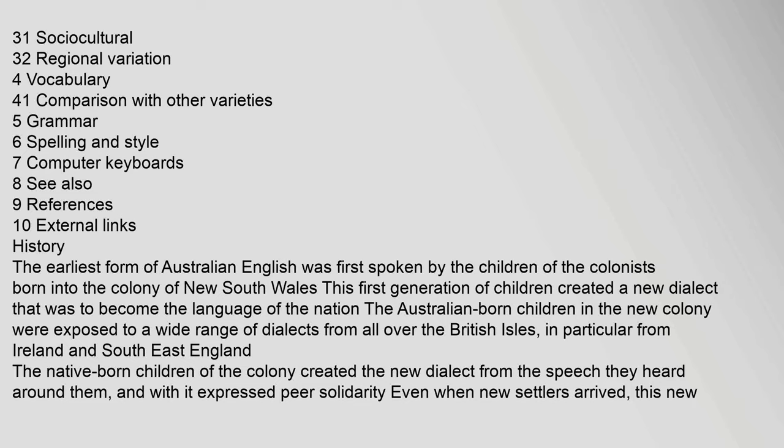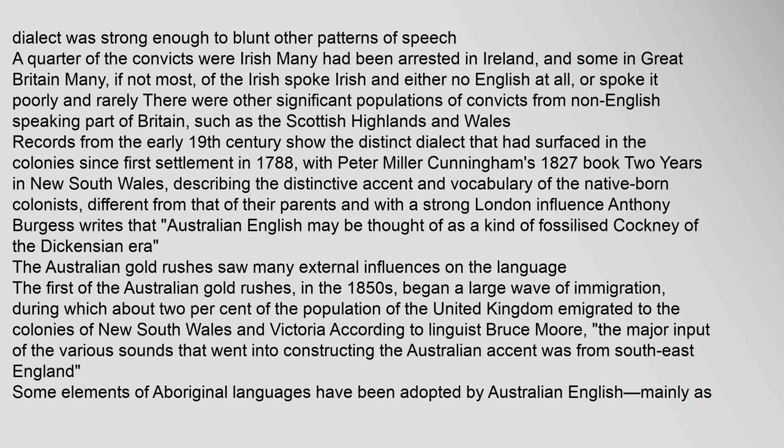The earliest form of Australian English was first spoken by the children of the colonists born into the colony of New South Wales. This first generation of children created a new dialect that was to become the language of the nation. The Australian-born children in the new colony were exposed to a wide range of dialects from all over the British Isles, in particular from Ireland and South East England. The native-born children of the colony created the new dialect from the speech they heard around them, and with it expressed pure solidarity — even when new settlers arrived, this new dialect was strong enough to blunt other patterns of speech.